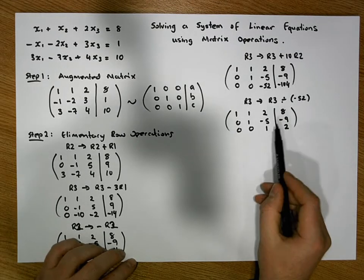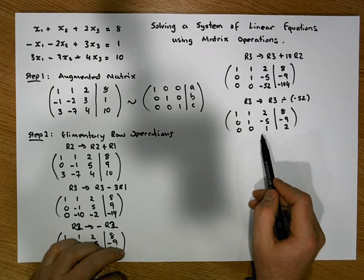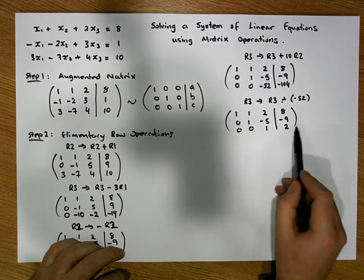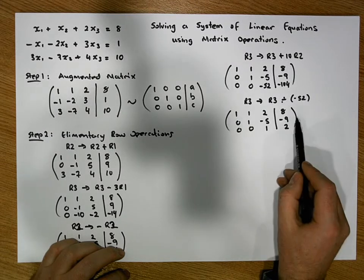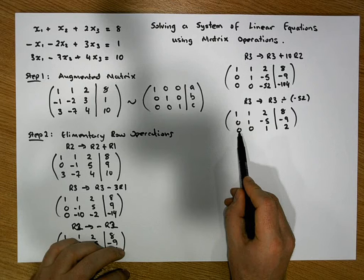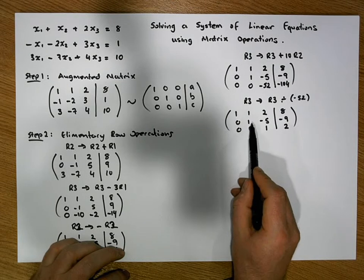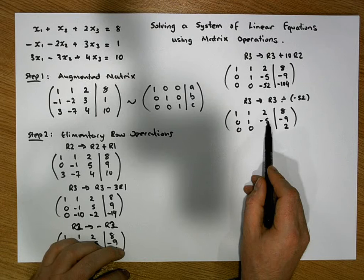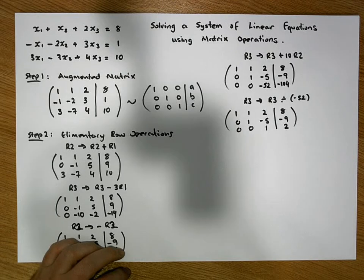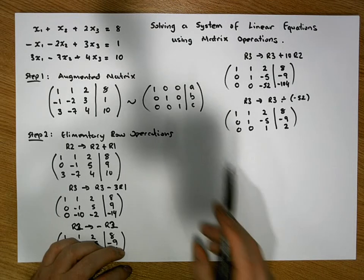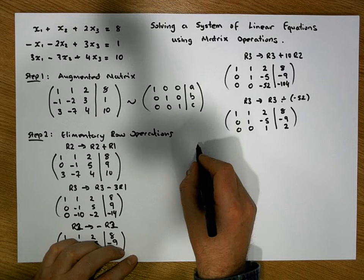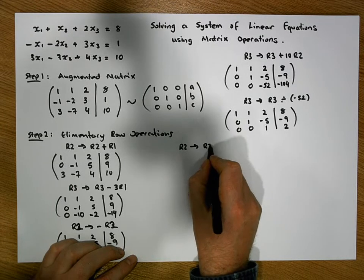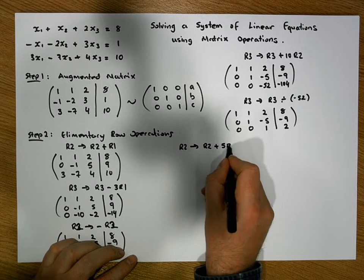Hopefully what we can see here is that if I add on a multiple 5 times row 3 onto row 2, the effect will - the 0 won't have an effect on this, the 0 won't have an effect, but 5 times 1 is 5, 5 plus minus 5 gives me 0, that will have an effect of changing that to a 0 as we require. So what we're going to say is that row 2 is changed to row 2 plus 5 times row 3.